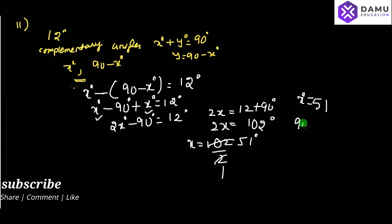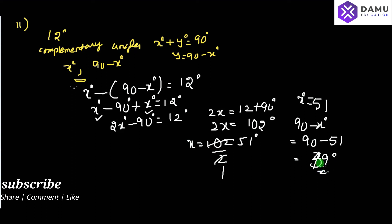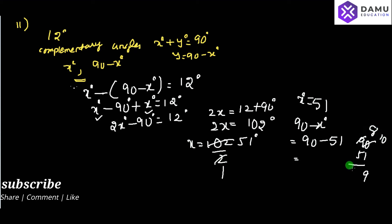Then, 90 minus x — that is the complementary angle for this case — 90 minus 51. Calculating: 10 minus 1 is 9, 8 minus 5 is 3, so it comes to 39 degrees.